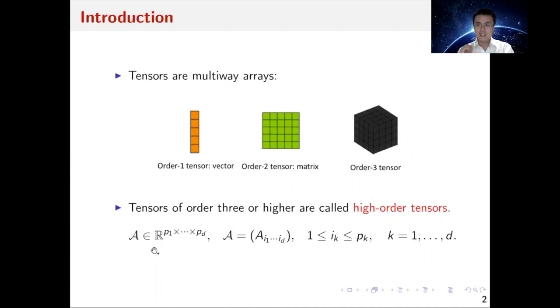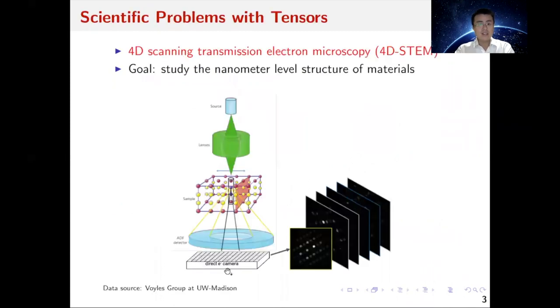Why do we care about tensors? Tensor problems appear in a lot of scientific research. For example, to investigate the nanometer structure of materials such as proteins or tissues, scientists have developed different types of electron microscope technology like this 4D STEM technology.